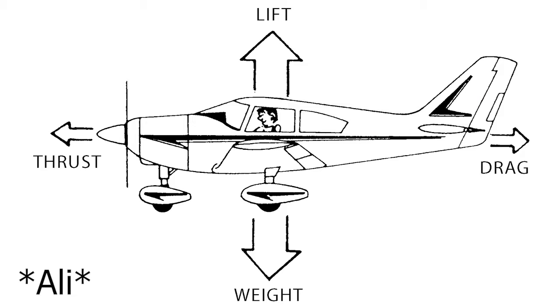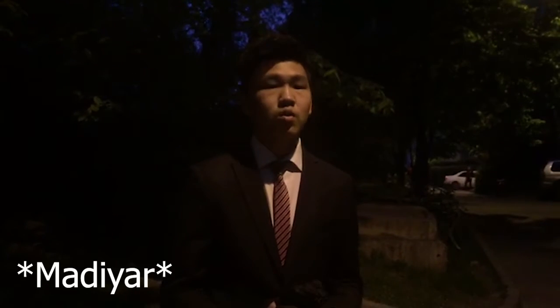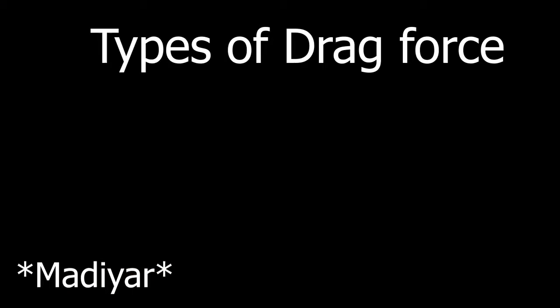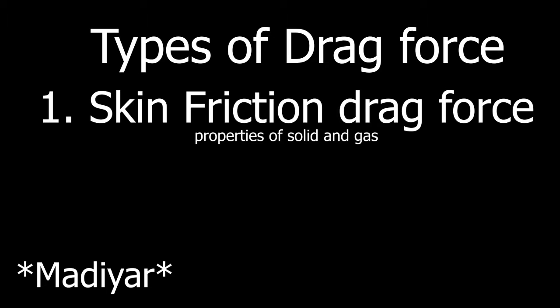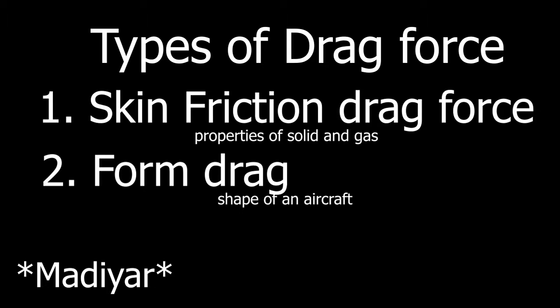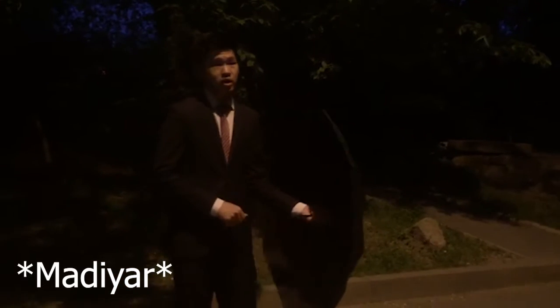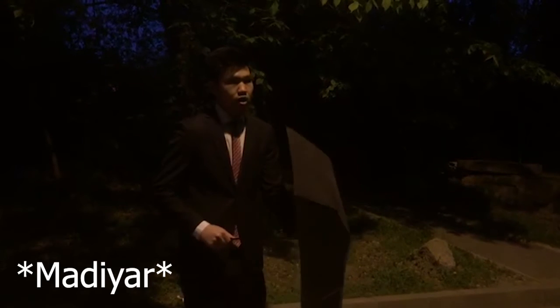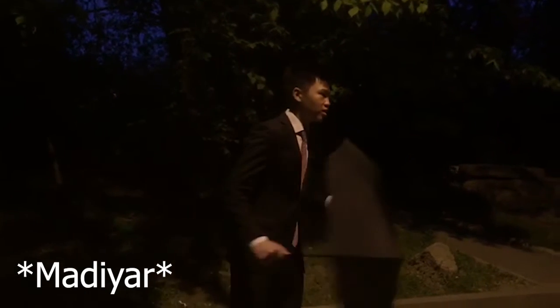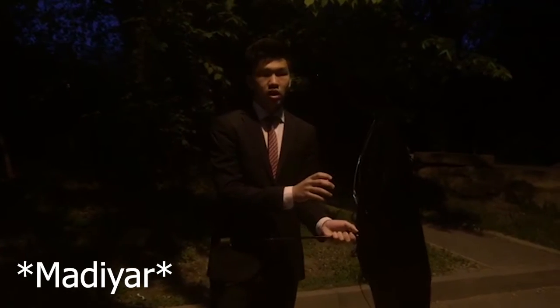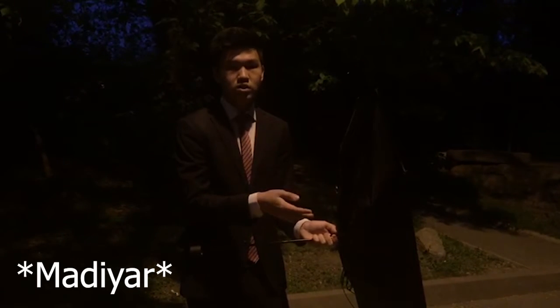Another aerodynamic force affecting an aircraft is drag. Drag force is the aerodynamic and mechanical force applied to an aircraft, and its direction is opposite to the motion. There are subtypes of drag force: the first is skin friction drag, which is related to the properties of solid and gas; the second is form drag, related to the shape of the aircraft; and the third is induced drag, which is related to lift force — the greater the lift force, the greater the drag force. As an example, we can use an umbrella with air particles: by giving the umbrella momentum and velocity, this changes the shape of the umbrella, demonstrating skin friction drag and form drag.